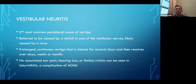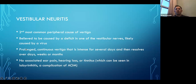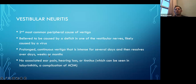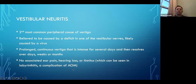Vestibular neuritis is the second most common cause of vertigo — a peripheral cause. It's believed to be caused by a deficit in one of the vestibular nerves, likely viral in origin. It produces prolonged, continuous vertigo that is intense for several days and then resolves over days, weeks, or months. The keyword here is prolonged — unlike BPPV's 20-second to two-minute episodes. This is constant and doesn't go away regardless of movement. There is no associated ear pain, no hearing loss, and no tinnitus. Absence of hearing loss becomes very important because hearing loss makes us think more stroke than vestibular neuritis.